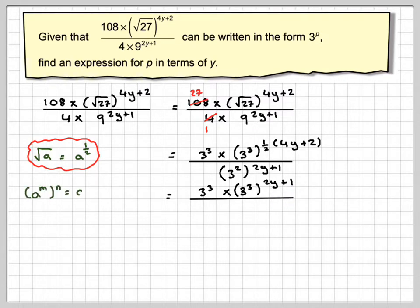In the bottom, if we use a to the m to the n is a to the m times n, then that means I can now multiply by that. So we get 3 to the 4y, 2 times 2y, plus 2 times 1, which is plus 2.